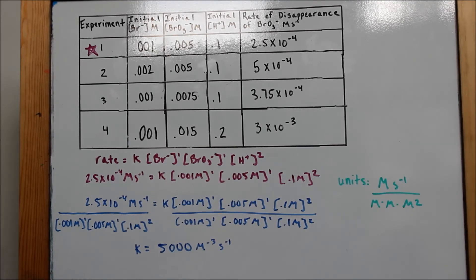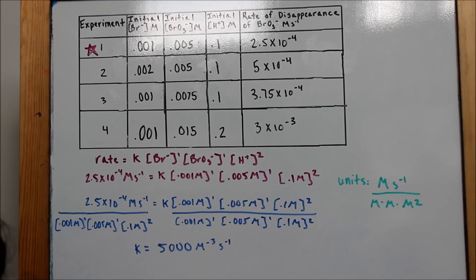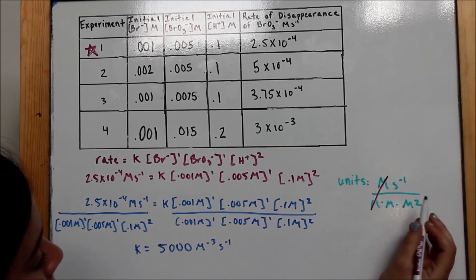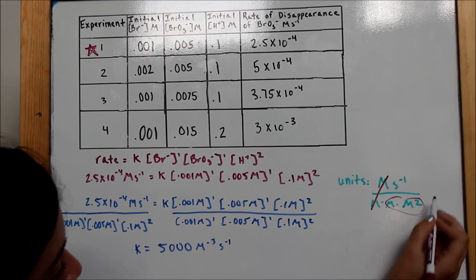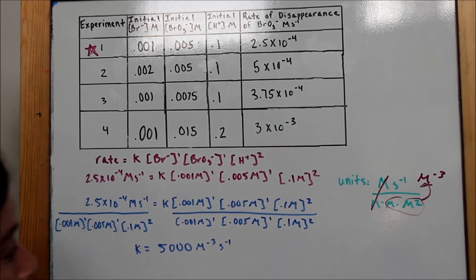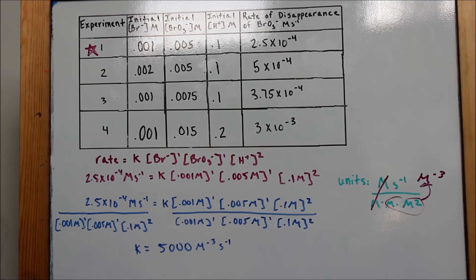Because correct units are very important in the specific rate constant problem, we will perform a unit analysis. The molarity seconds to the negative 1 comes from here. The molarity, molarity, and molarity squared come from here. We can cancel out the molarities and bring this molarity cubed up to the top by making it M to the negative 3. These units verify the units we found here.